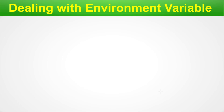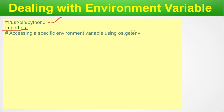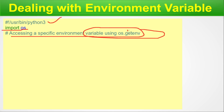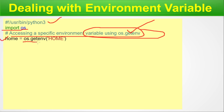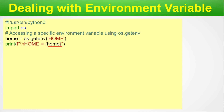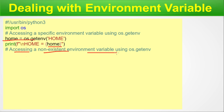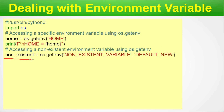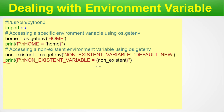You may also need to change or replace environment variables in real time. First line is the interpreter, then import os. To access a specific environment variable, we use os.getenv('HOME'), storing the result in a variable called home and printing it. Next, to access a non-existent environment variable, we use os.getenv('NON_EXISTENT_VARIABLE', 'default') — providing a default value.